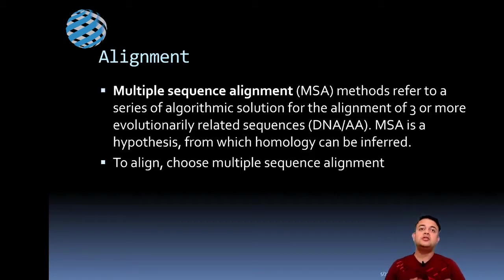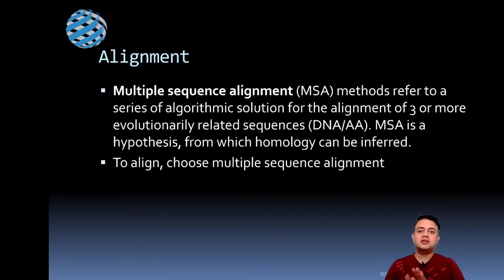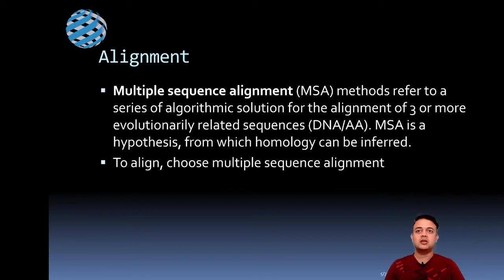Multiple sequence alignment is a hypothesis from which homology can be inferred. There is no gold standard — it all depends on you. There is no single standard way to perform sequence alignment. You can try ClustalX or ClustalW and refine it manually, trying different options, but there are good and bad points to each multiple sequence alignment approach.